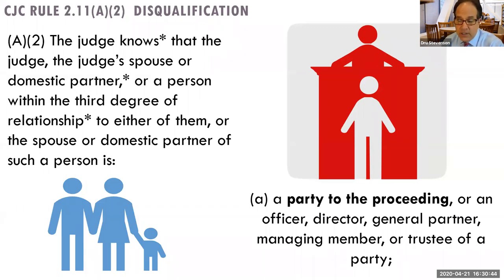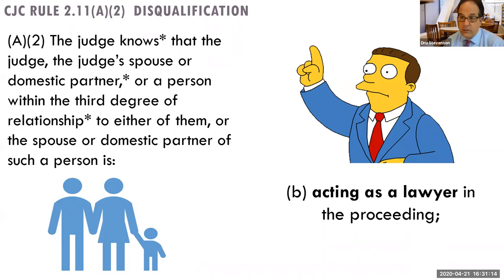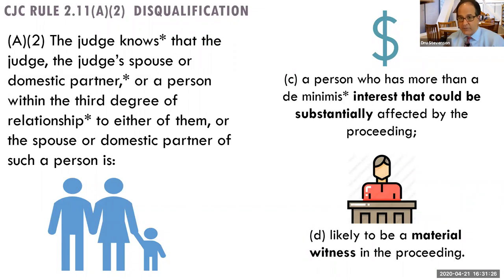You should not be the judge in a case where your spouse, life partner, one of your children, your parent, your brother-in-law, or even a sibling is the lawyer in the case. Third under A2, if your spouse, parent, sibling, or someone like that has more than a de minimis financial interest at stake in this particular proceeding, you should also recuse.